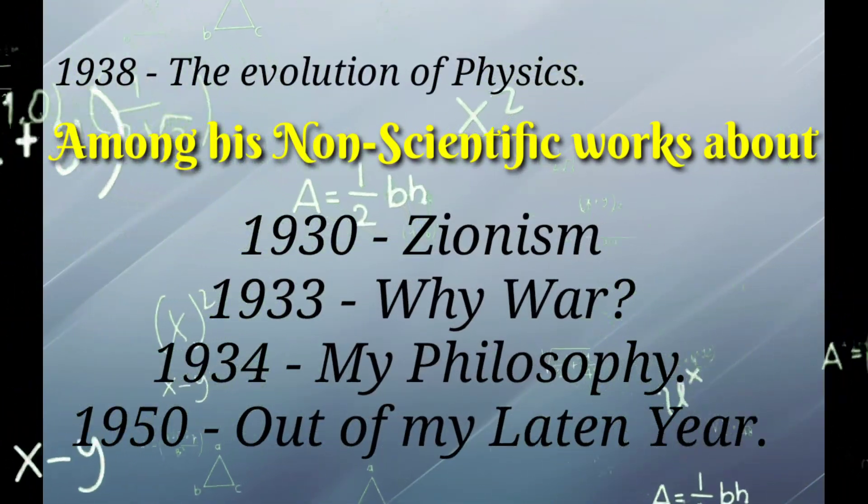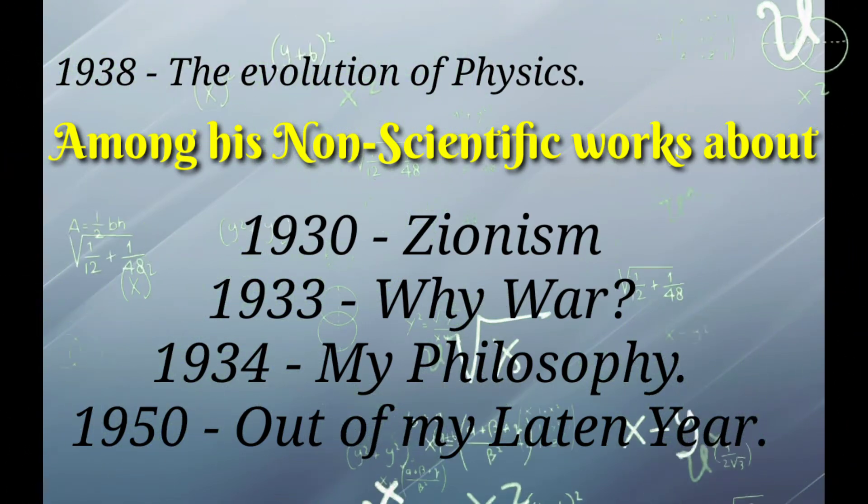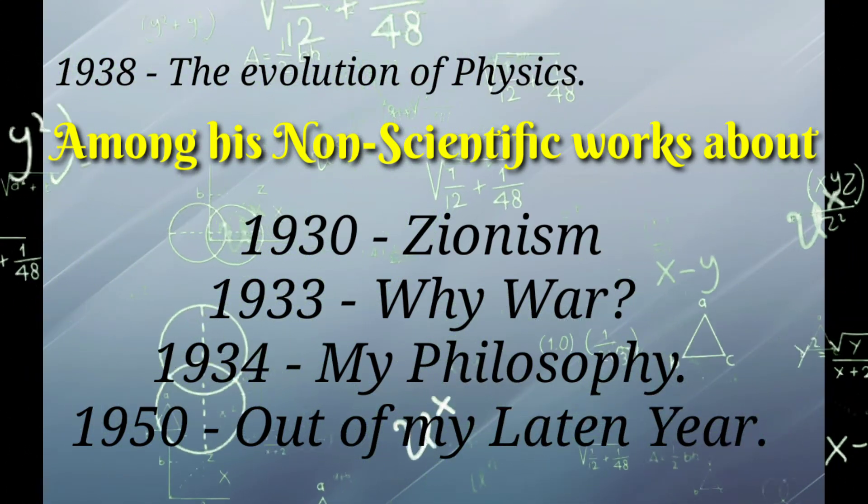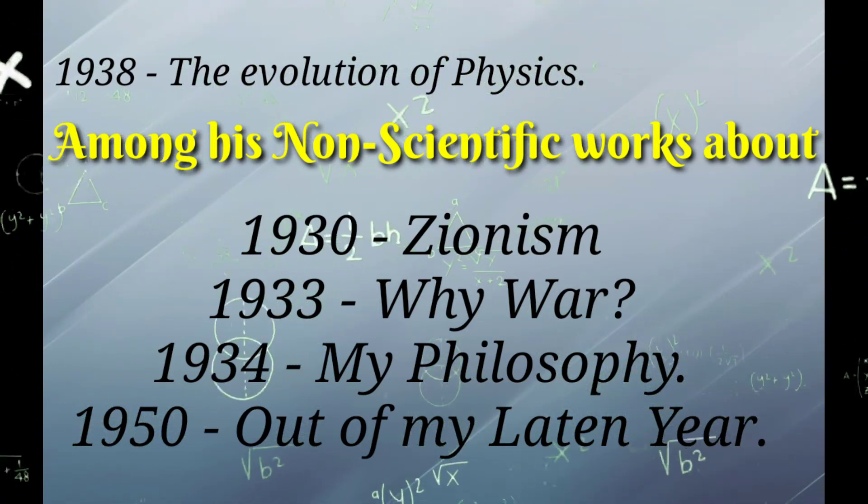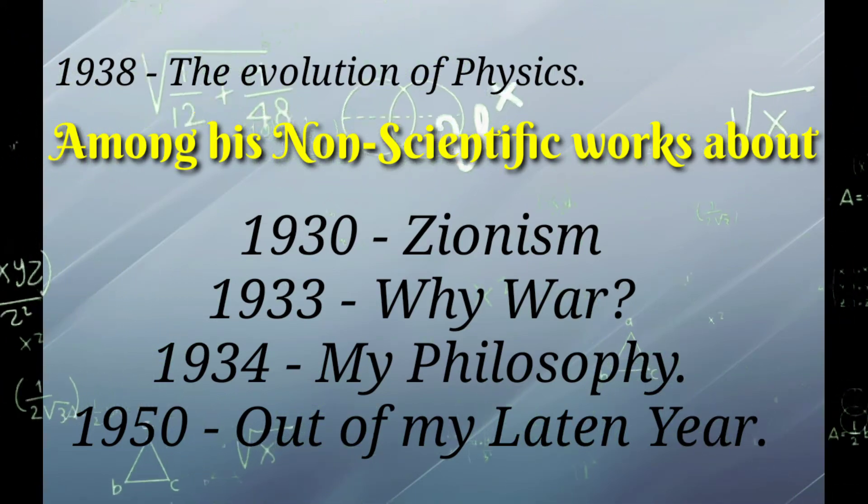Among his non-scientific works: About 1930, Zionism. 1933, Why War? 1934, My Philosophy. 1950, Out of My Later Years.